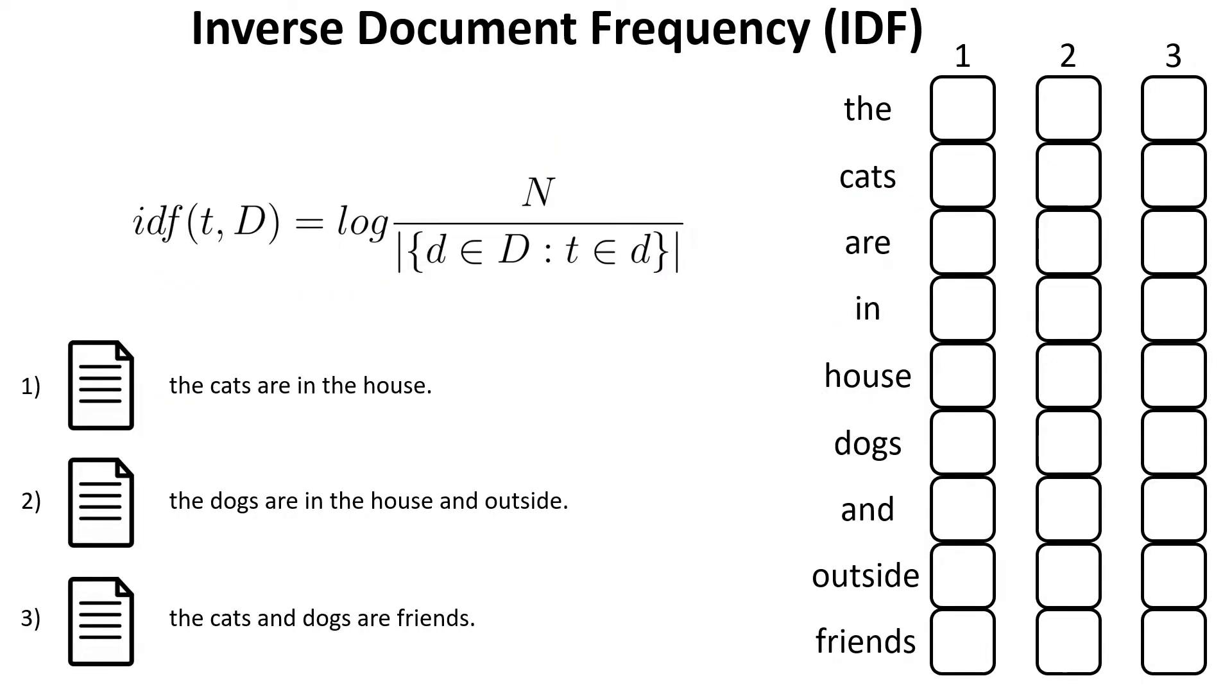The second part of the TF-IDF is the inverse document frequency. And here we look globally at how often a word is found in the document. So, what we have here in IDF, it takes as input the term T, capital D, and this D is different from the one used in the term frequency formula. Here, D represents all the documents in our corpus and represents the total number of documents.